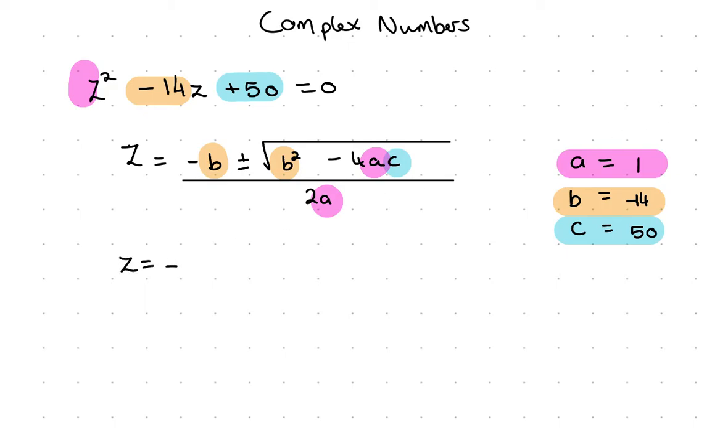I sub this in: z equals minus, so I put the minus there, and I have 14. So it's minus (-14) plus or minus the square root of b², which is (-14)², minus 4 by a which is 1, by c which is 50. That's all over 2a, which is 2 by 1.